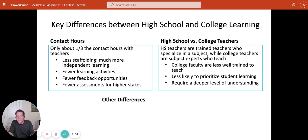So their first priority actually is their discipline and then teaching comes after that. So college faculty are less well trained to teach and in many cases they may be less motivated to teach because college faculty have other responsibilities such as doing research and scholarship and that may be a higher priority for them.